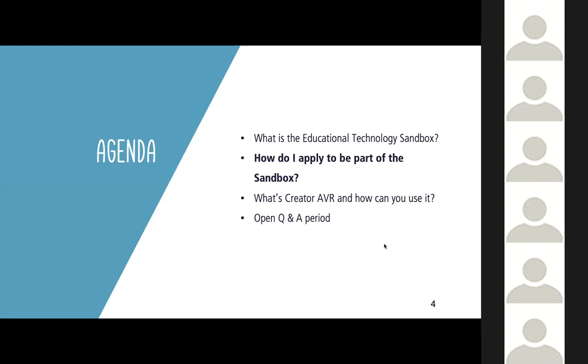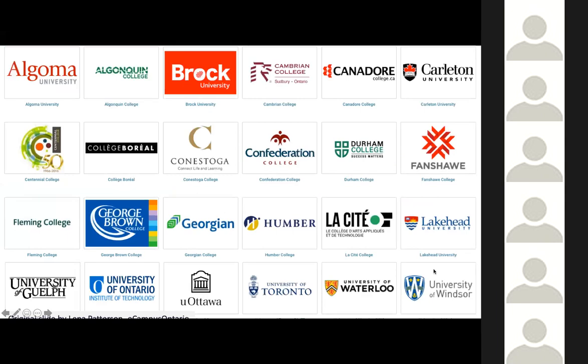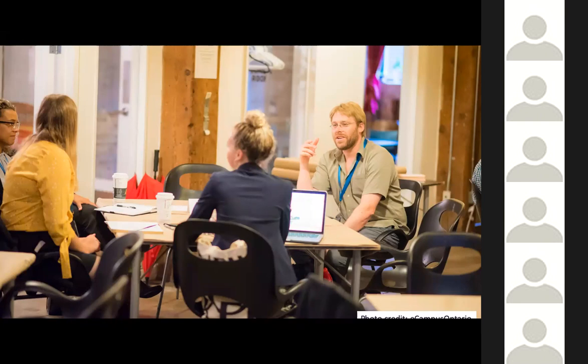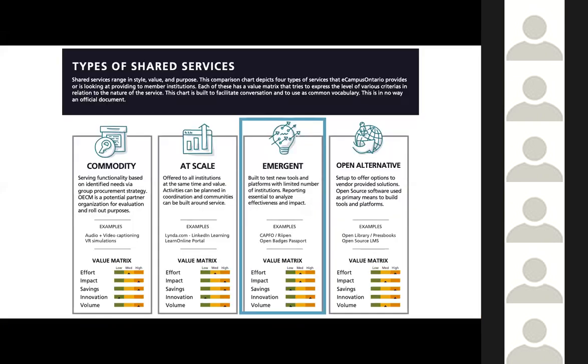Some of you may be familiar with eCampus Ontario. We are a government-funded, not-for-profit consortium and our members include all 45 publicly funded institutions in Ontario — 24 colleges and 21 universities across the province. One of our core principles is building space for members to connect and collaborate, to cross paths and contribute to thinking about problems and solutions that have the potential to impact the whole province.